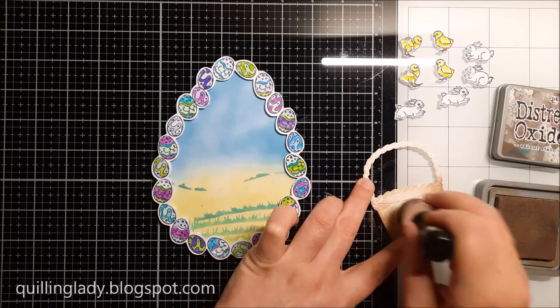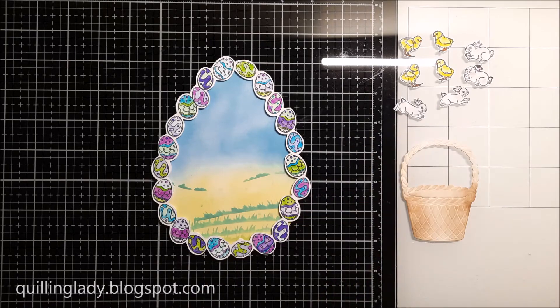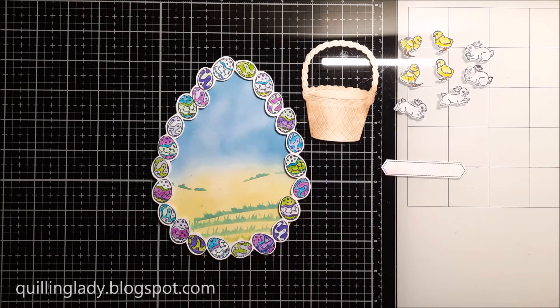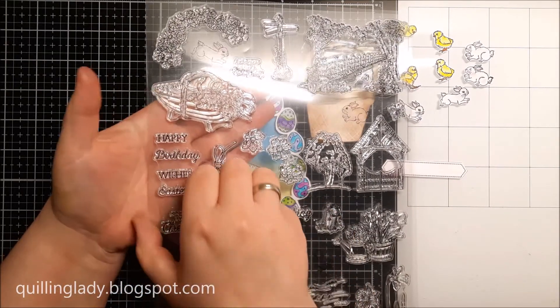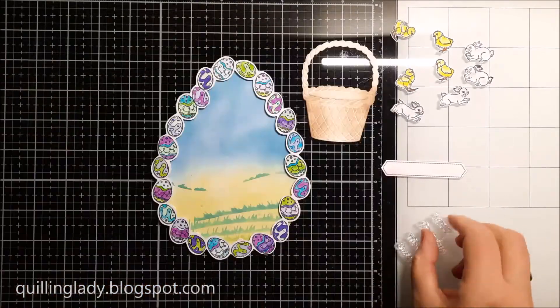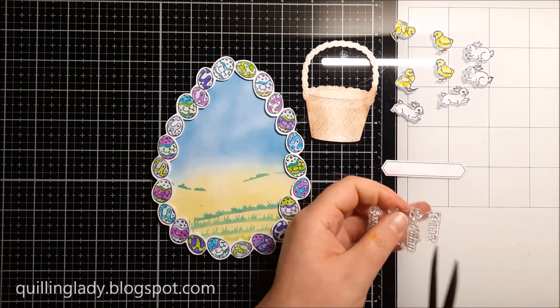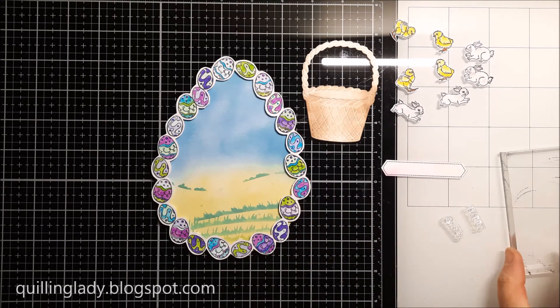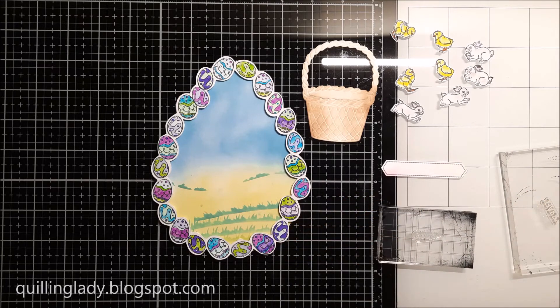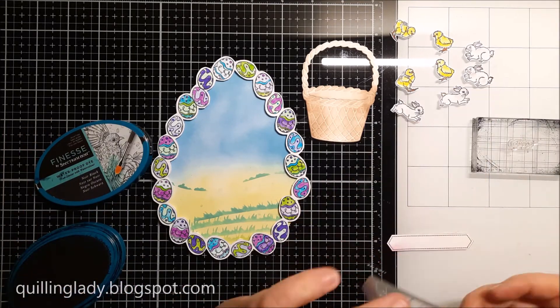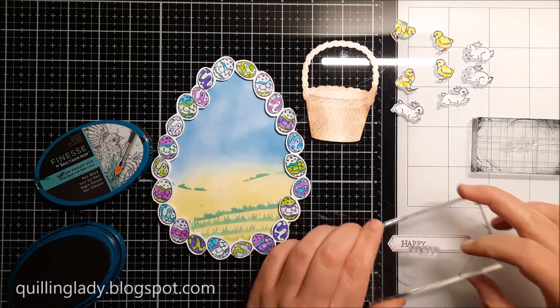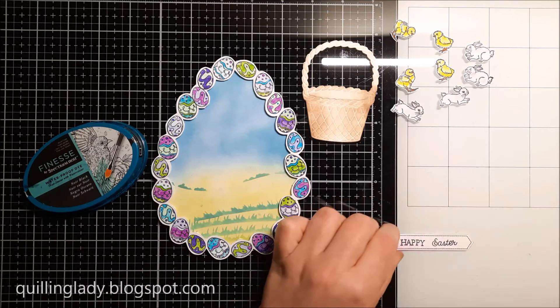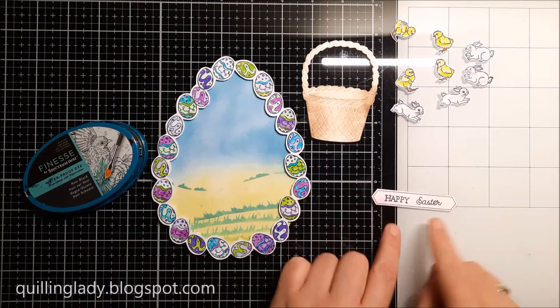Now it is time to add a sentiment and I'm going to use the sentiment from the stamp set. It actually comes in one piece, so again I'm going to use my scissors to cut them apart and I'm going to use that Happy and Easter words. Again I'm going to use my waterproof black ink because it always gives me that nice crisp image.